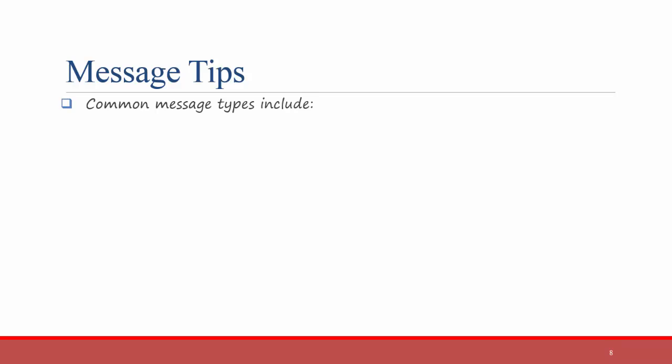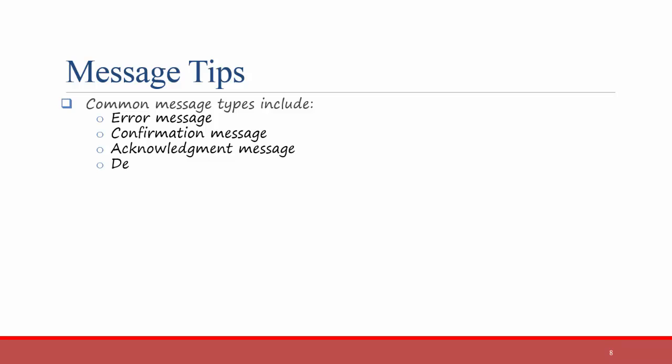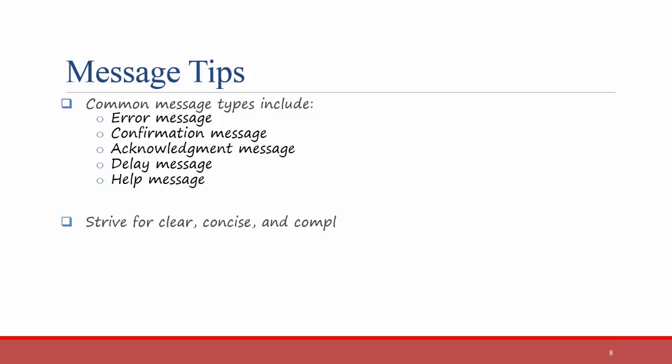Messages are something that are important to help navigate a system. Some common message types include error messages, confirmation messages, acknowledgement messages, and delay messages — these are the messages users see when there is some delay. For example, when you're downloading something that's taking a long time, you might see a percentage downloaded. When Windows is waiting to do something, you see that the icon changes to a blue circle. There are also help messages. All of these are helpful in aiding the user to better navigate your system. Strive for clear, concise, and complete messages — the three Cs.